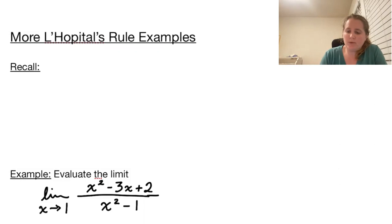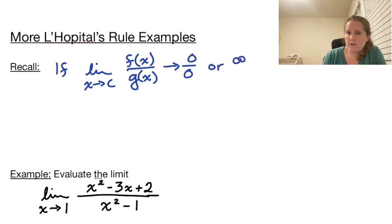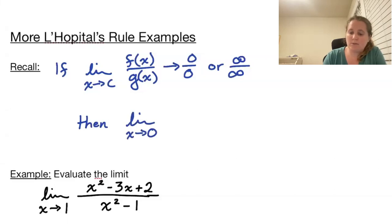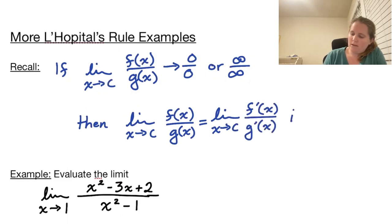Welcome to more L'Hopital's Rule examples. Recall from the previous video: if we have an indeterminate form — the limit as x approaches c of f(x) over g(x) — that goes to either 0/0 or infinity/infinity, then that limit can be found by taking the limit as x approaches c of f'(x) over g'(x), if that limit exists.